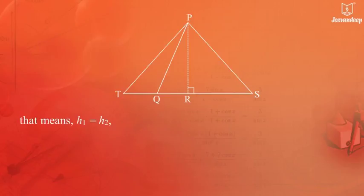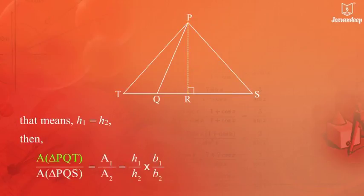That means H1 equals H2. Then, area of triangle PQT upon area of triangle PQS equals A1 upon A2 which equals H1 upon H2 multiplied by B1 upon B2.